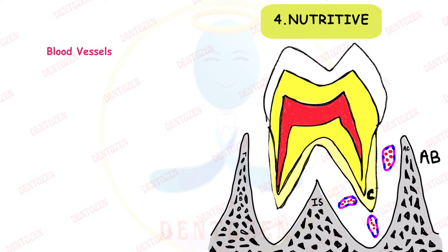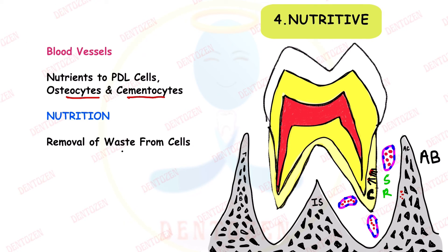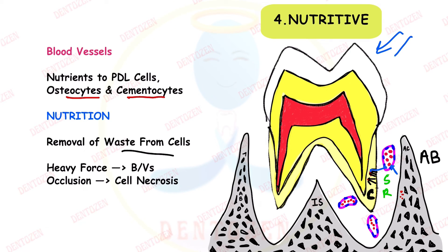The fourth function is nutritive. Blood vessels in the periodontal ligament provide nutrition to synthetic cells, resorptive cells, osteocytes in bone, and cementocytes in the cementum. Cementocytes have their processes directed toward the PDL to receive nutrition. Blood vessels also remove waste products from these cells. If excessive force is applied, blood vessels in that region get occluded, causing cell necrosis in that area of the PDL due to lack of blood supply.